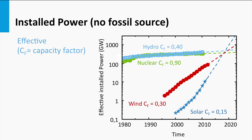However, the trend in the growth of solar energy will continue in the coming years. If we extrapolate the trend of the last decade, we see that the installed power of solar energy will exceed nuclear, wind and hydropower by the end of this decade. It is just a matter of time that solar becomes the most important energy source not based on burning fossil fuels.